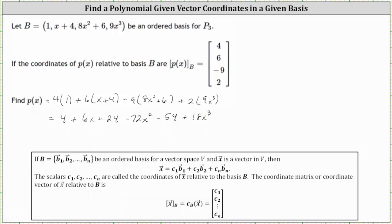Now combining like terms, we have the constants 4 plus 24 minus 54 equals negative 26, giving us negative 26 plus 6x minus 72x squared plus 18x cubed.